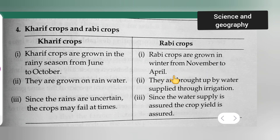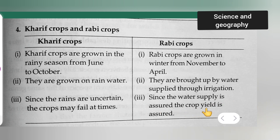The second point is they are brought up by water supplied through irrigation. Third point is, since the water supply is assured, the crop yield is also assured.